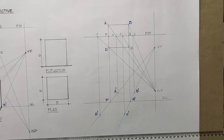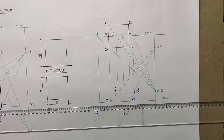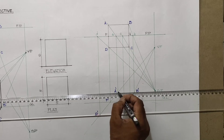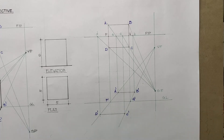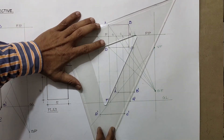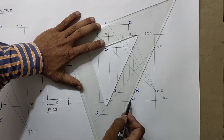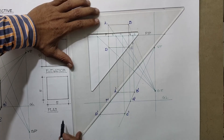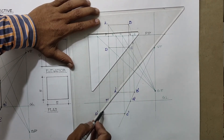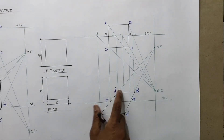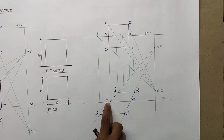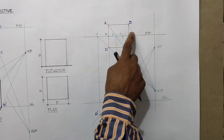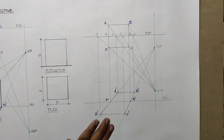We now have the plan. To complete it: I'll connect A-dash and B-dash, connect D-dash and C-dash, connect B-dash and C-dash, and connect A-dash and D-dash. We can see A, B, C, D in plan perspective with P, Q as the center. PP is passing through and GL is passing through, so our plan in perspective is correct.